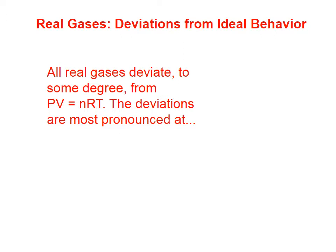Up to this point, we've only been dealing with ideal gases. Well, it turns out that all real gases deviate, to some degree, from PV equals nRT.